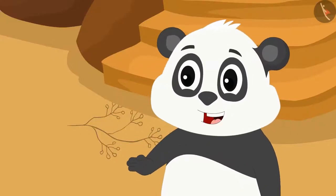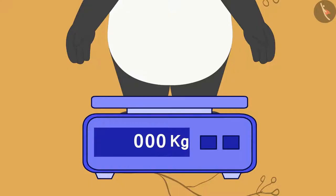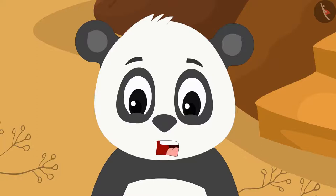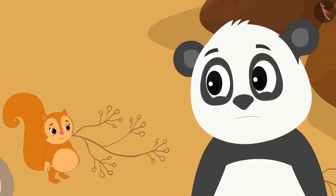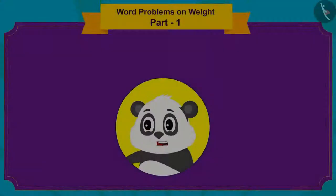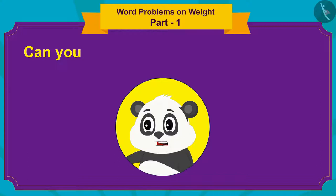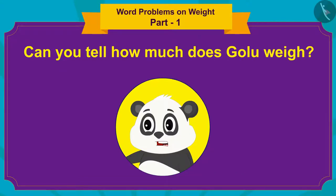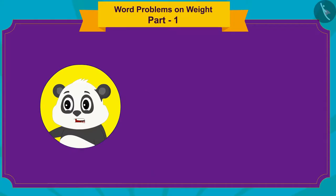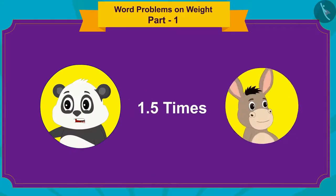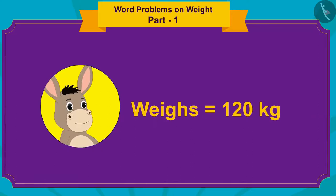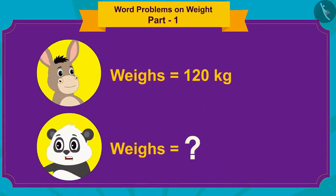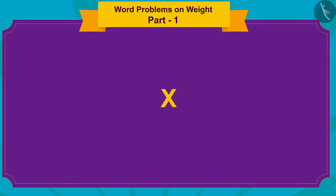Let me take my weight now. Golu said and stood on the weighing scale. My weight is one and a half times your weight, Golu said to Bholla. Children, can you tell how much does Golu weigh? Golu's weight is one and a half times Bholla's weight, and Bholla weighs 120 kilograms. So, to find Golu's weight, we have to multiply Bholla's weight by 3/2 or 1.5.